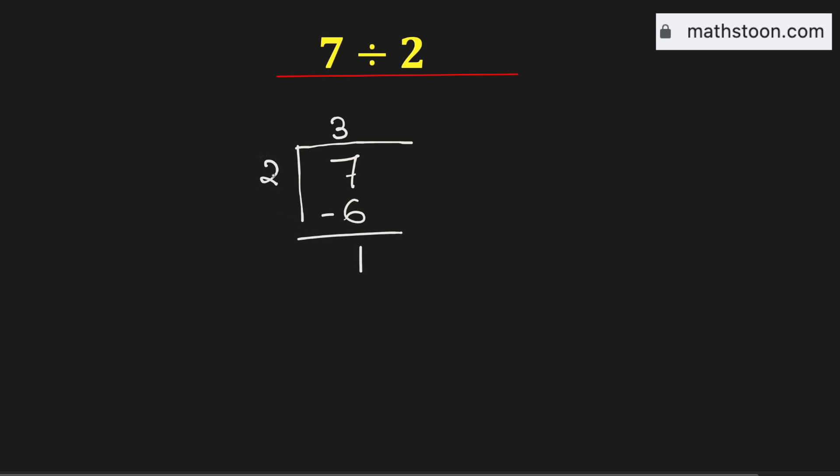Now we know that 2 cannot go into 1. So we need to put decimal here and then we can get 0.